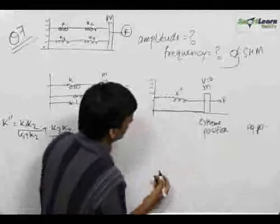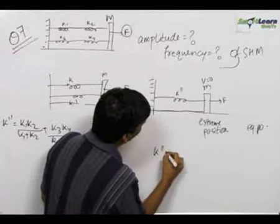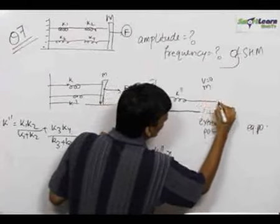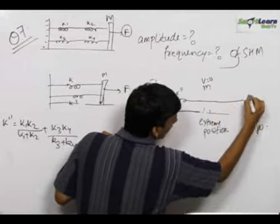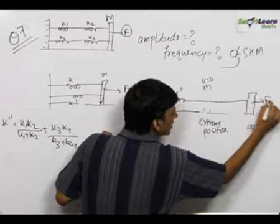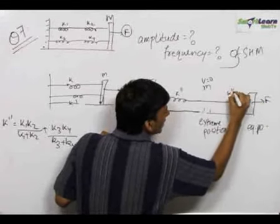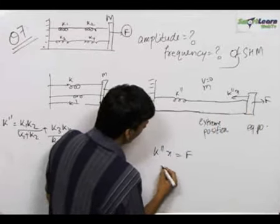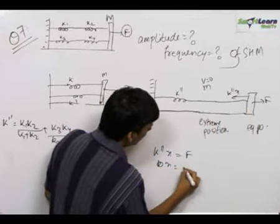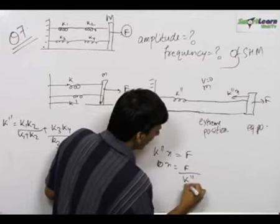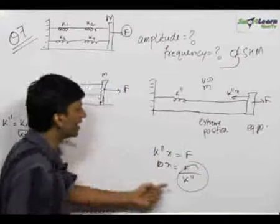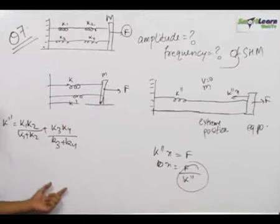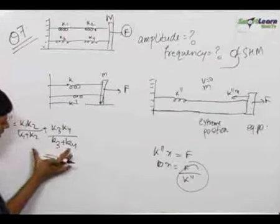At the equilibrium position, k double dash into x — that is, the spring will be displaced by some amount x such that the net resultant force becomes zero. Therefore k double dash·x becomes equal to F, and x becomes equal to F upon k double dash. So we get the answer for the amplitude of the SHM to be F upon k double dash, which is equal to F upon this quantity.